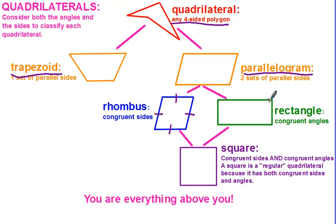Then look at the angles. If all four angles are congruent and for quadrilaterals that means they would have to be 90 degrees, then you can say that you have a rectangle. If both the sides and the angles are congruent, then you have a square. A square is considered the regular quadrilateral because it has both congruent sides and congruent angles.